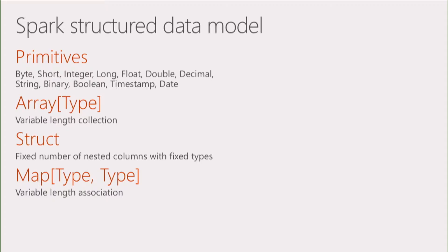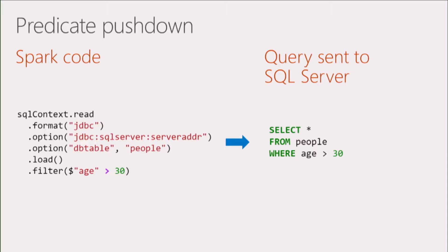Question on predicate pushdown capabilities: right now they're limited by the data source API contract. They work only on conjunctions of simple predicates — Spark will push down AND predicates, but cannot push down OR or more complex expressions.